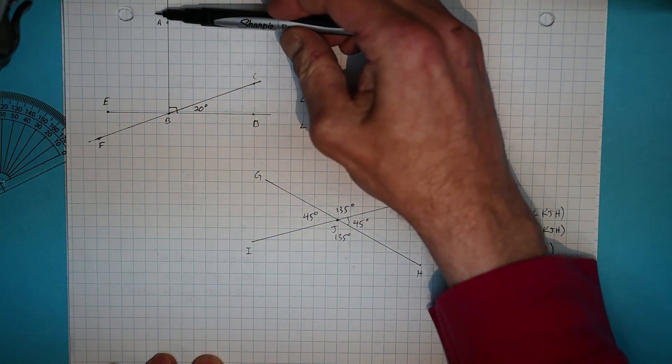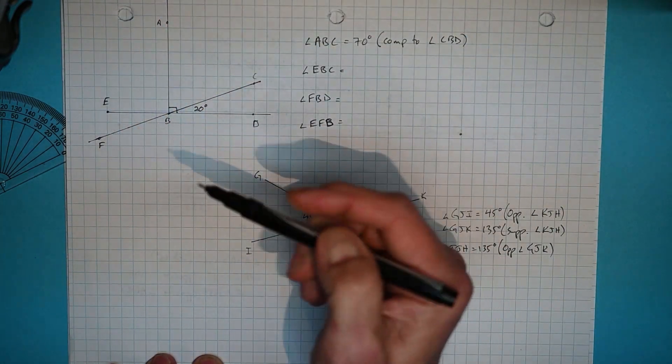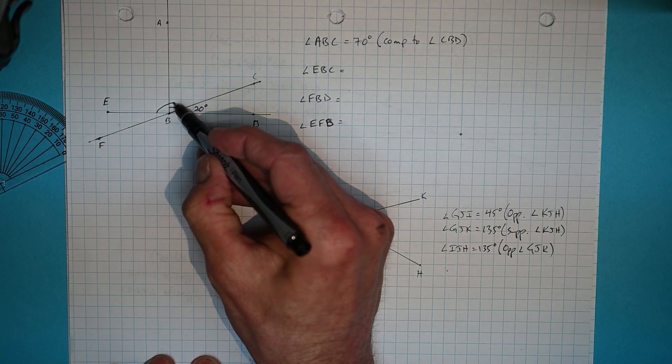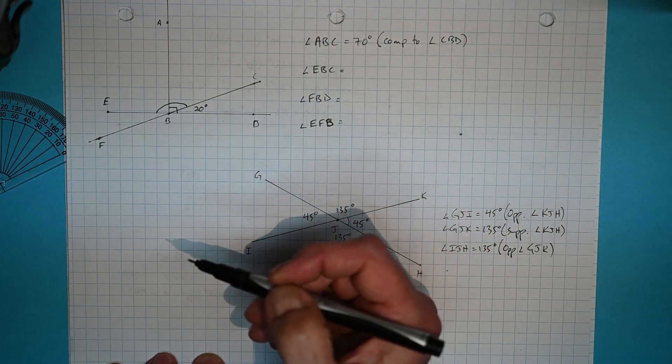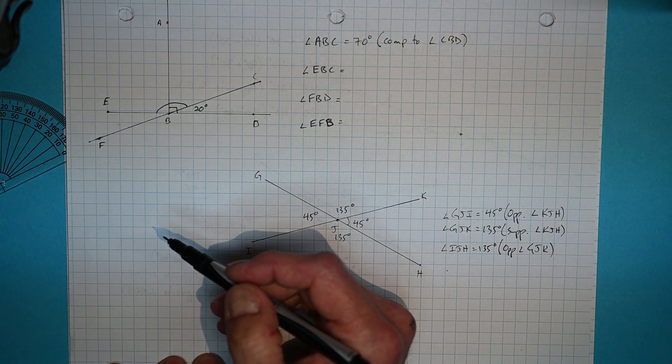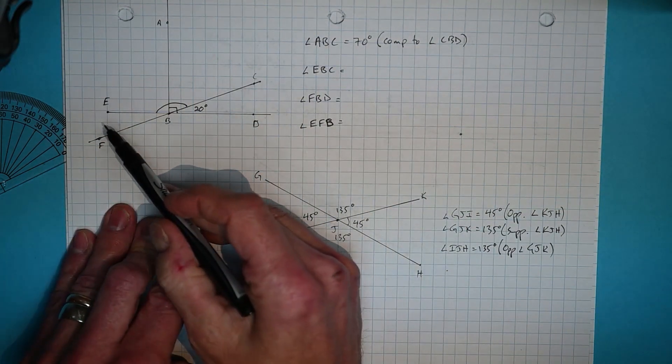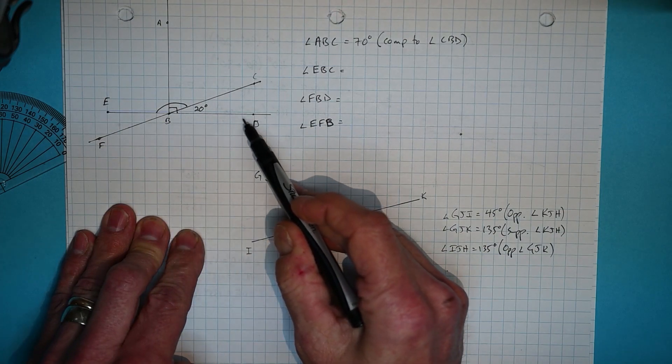That brings us to EBC. And for this we kind of need to ignore this line that comes down here and just have a look at this angle that comes right across that whole area there.